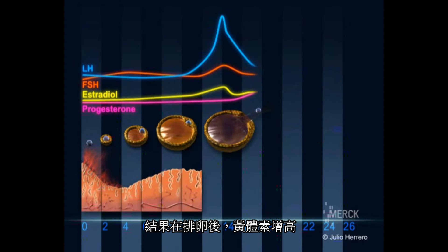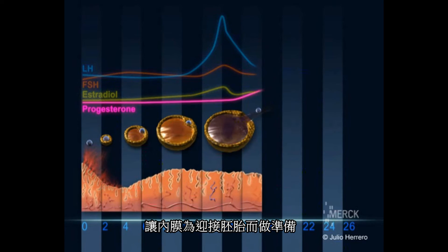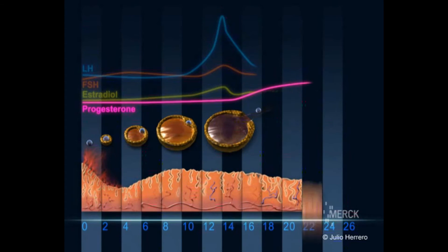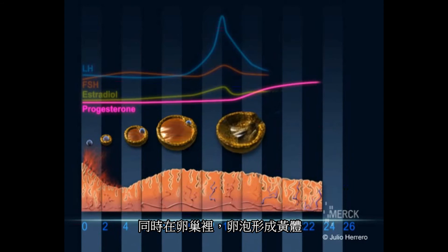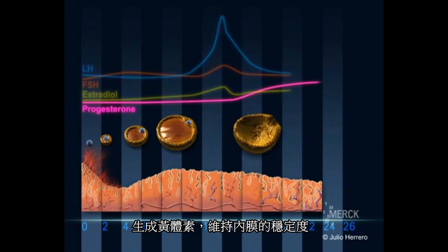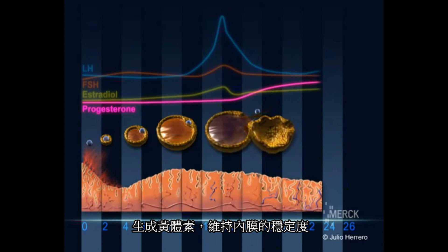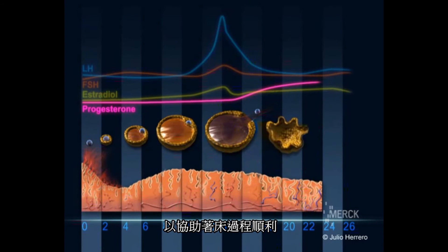As a result of the rise in progesterone following ovulation, the endometrium transforms itself in preparation for the reception of the embryo. At the level of the ovary, the follicle transforms into the corpus luteum, producing progesterone, which maintains the quality of the endometrium, facilitating implantation.